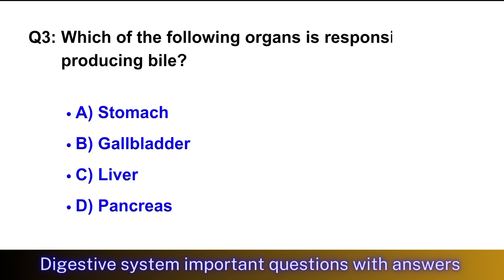Question No. 3: Which of the following organs is responsible for producing bile? The right option is option C, liver.